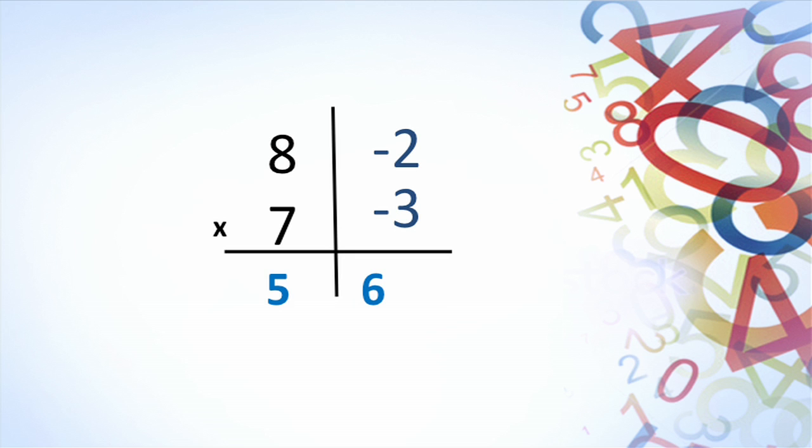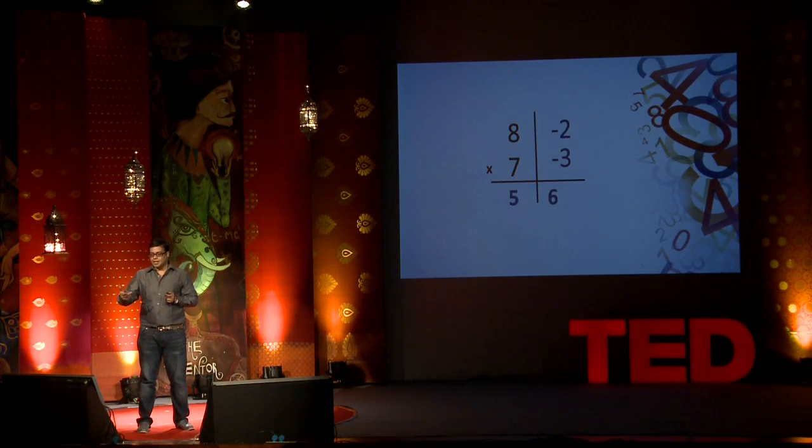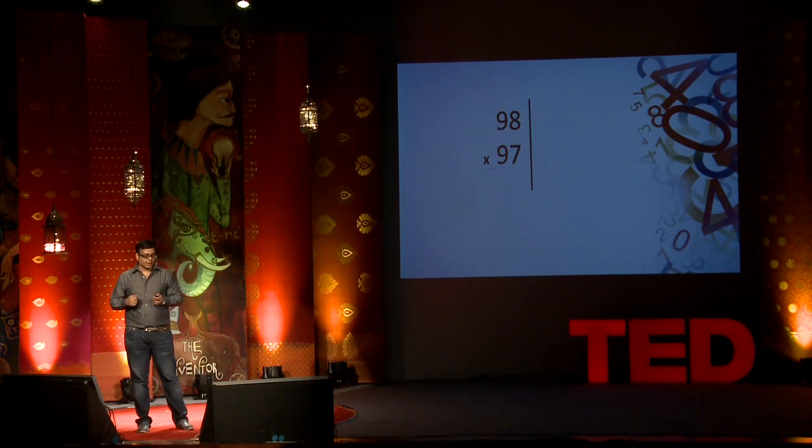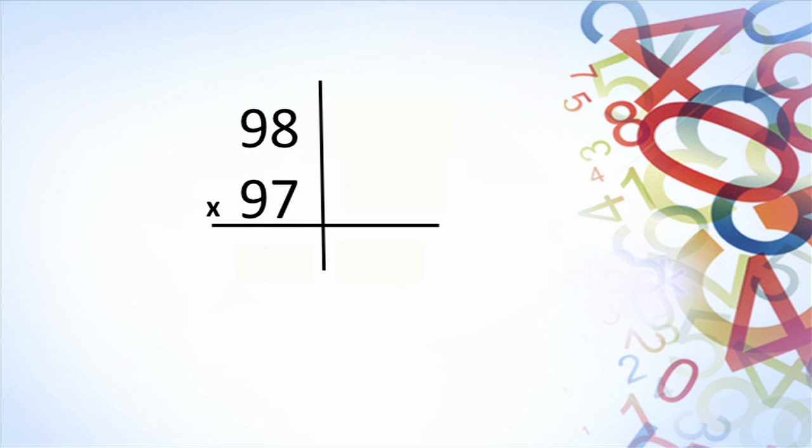So the answer becomes 56. So we can extend this rule which is called the base method to a sum called 98 times 97. Let's do this together. Is 98 above 100 below 100? Below by how much? So we got minus 2. And 97 is below 100 by? 3. So we got minus 0,3. So 98 minus 0,3 gives us 95. And 0,2 times 0,3 gives us 0,6. So a big problem like this can be solved in a matter of few seconds making maths easier.